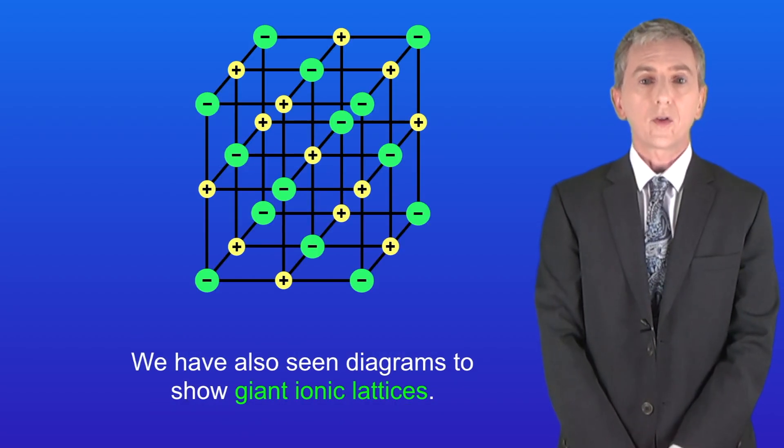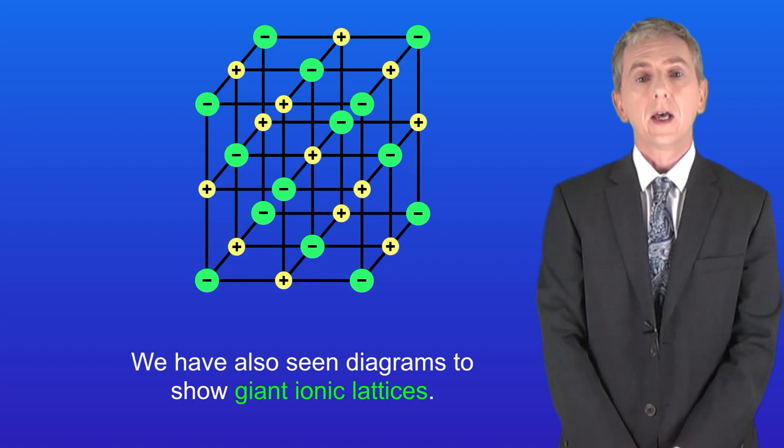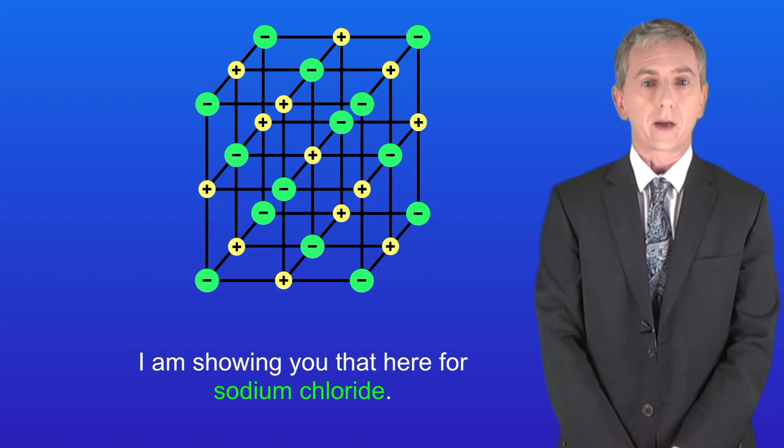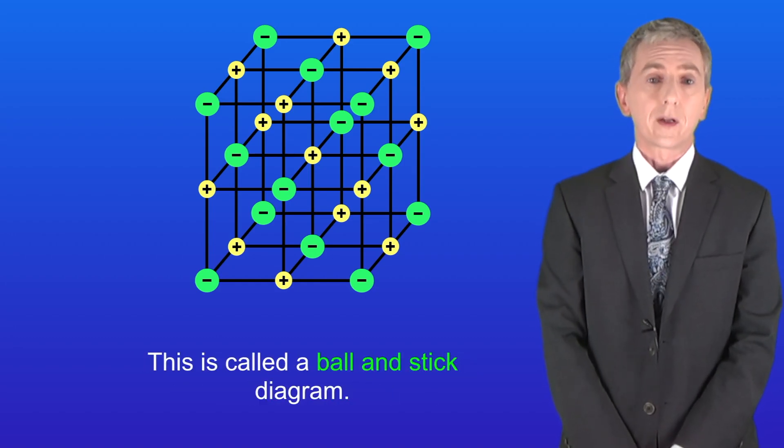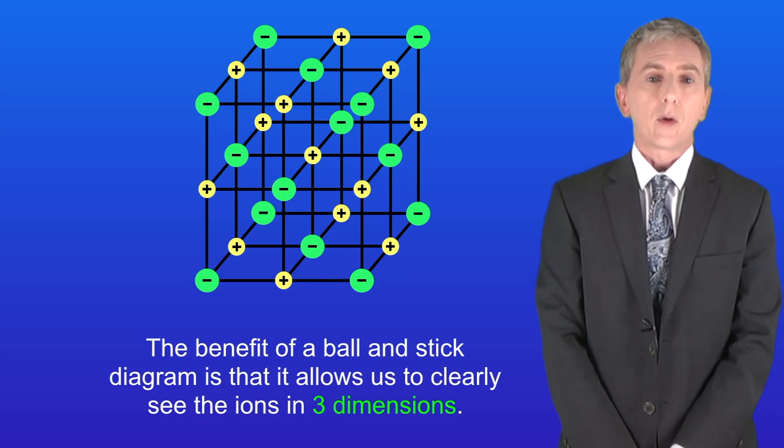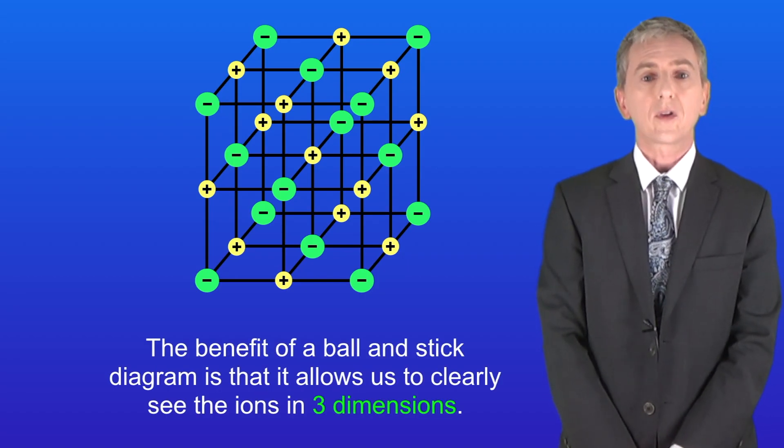Now we've also seen diagrams to show giant ionic lattices. I'm showing that here for sodium chloride. This is called a ball and stick diagram. The benefit of a ball and stick diagram is that it allows us to clearly see the ions in three dimensions.